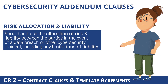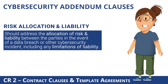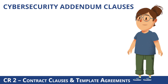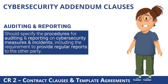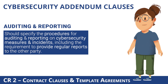Risk allocation and liability — the addendum should address the allocation of risk and liability between the parties in the event of a data breach and/or a cybersecurity incident, including any limitations of liability. Auditing and reporting — the addendum should specify the procedures for auditing and reporting on cybersecurity measures and incidents, including the requirement to provide regular reports to the other party.